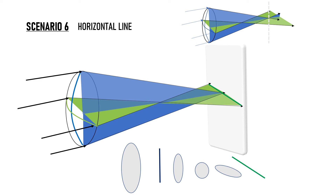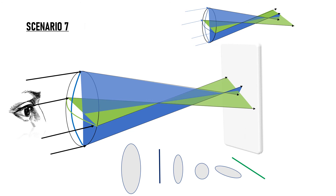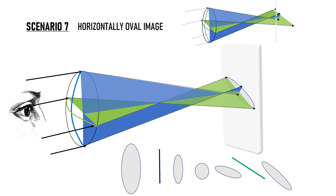Just to be clear: the line appears oblique in the diagram because we are viewing the screen from an angle, but looking at the screen straight on, we see a horizontal line. In the last scenario, when the screen is placed behind the second focal point, both beams are diverging — the horizontal beam has been diverging longer, so it diverges more than the vertical beam — and we get a horizontally oval image larger than the oval in Scenario 5.